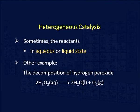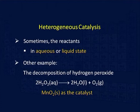Another example of heterogeneous catalysis is the decomposition of hydrogen peroxide, where the reactant is a liquid and the catalyst is MnO₂ powder, which is a solid. So in aqueous or liquid state as well, we can have heterogeneous catalysis. In the earlier example the catalyst was solid and reactant was gas; in this case the catalyst is solid and the reactants are in the aqueous or liquid state.